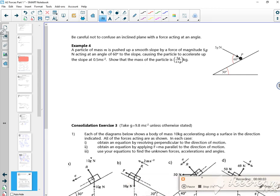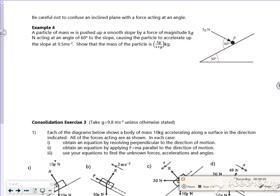Right then, last video for this lesson. It says be careful not to confuse an inclined plane with a force acting at an angle. So a particle of mass m is pushed up a smooth plane by a force of magnitude 5g.